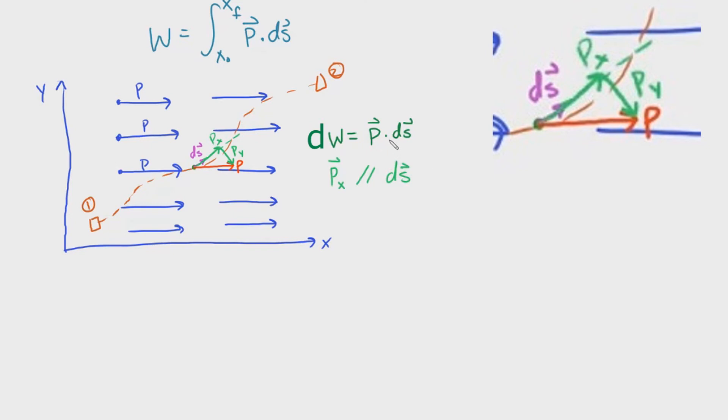By taking that dot product, we can actually find the projection of P onto the tangent line of the path. And then from there, all we have to do is sum up all those tiny changes within the path to get the total work done from state one to state two.